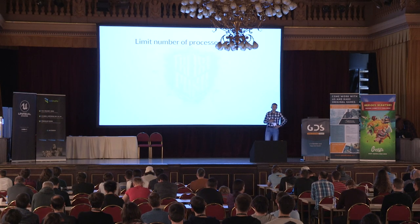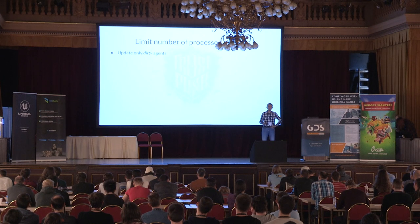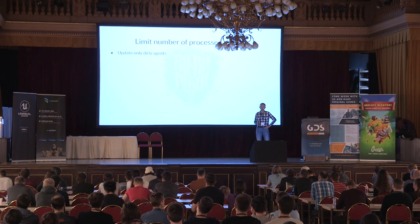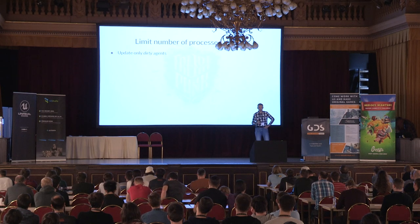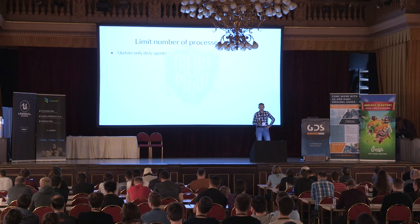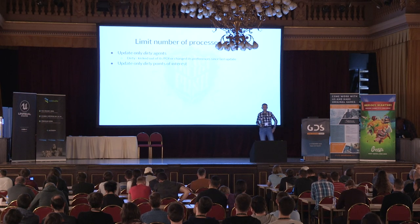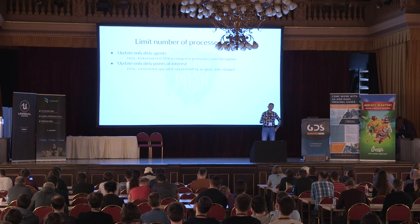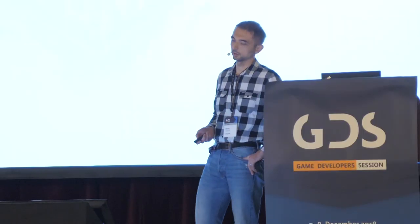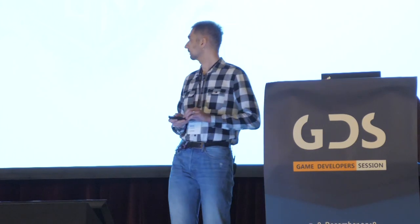The last performance technique is limiting the number of processed entities. Instead of updating all 900 agents and 1,000 POIs every time, we only update dirty agents — agents whose preferences changed since the last update — and dirty POIs, whose state changed since the last update. The exception is rebalancing, which requires updating all agents since the one to be kicked may not be dirty.